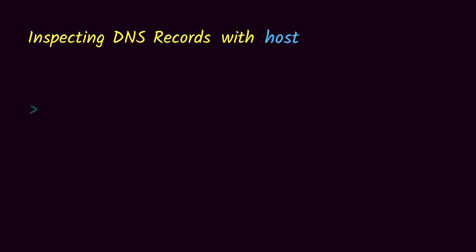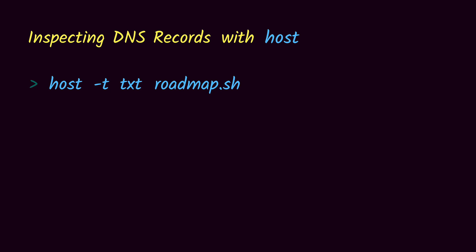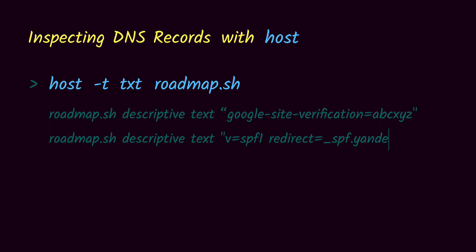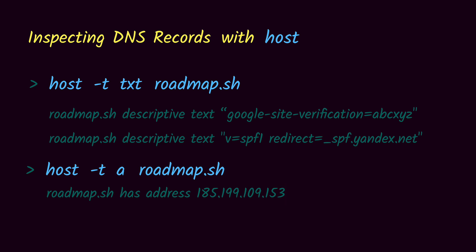The way you use host is you run the host command and then give it the option -t with the type of DNS record you want. For example, if I want to get the TXT record I will give 'txt' and then the domain name. Running this command in the console gives us all the TXT records associated to roadmap.sh — here I have two: the first is for Google site verification and the second is for Yandex which I'm using for emails. Similarly we can use it for other DNS records. For example, to get the IP address for roadmap.sh I can run the host command with type 'a' and get the IP address assigned to that domain name.